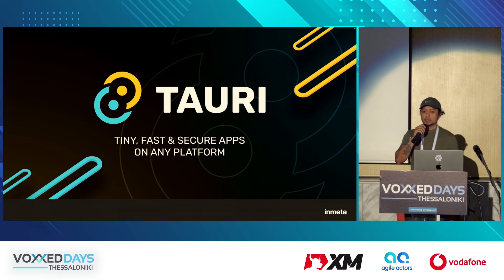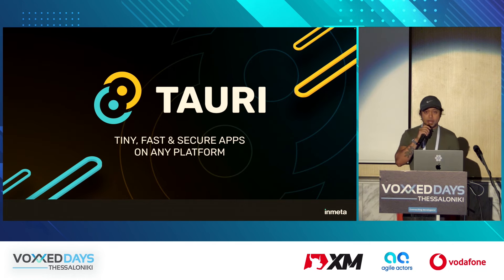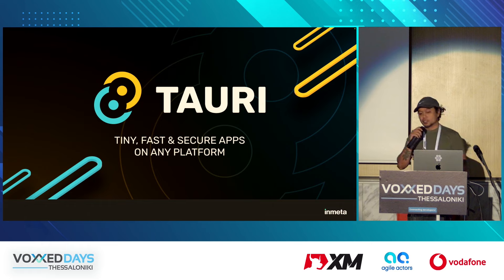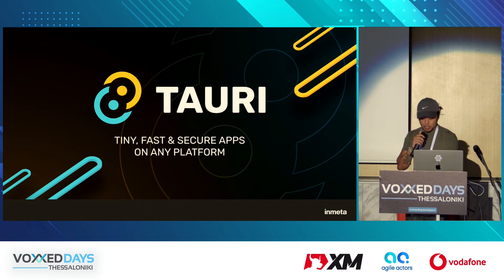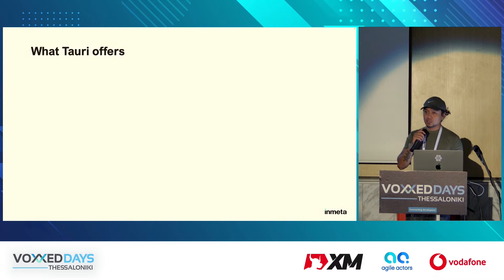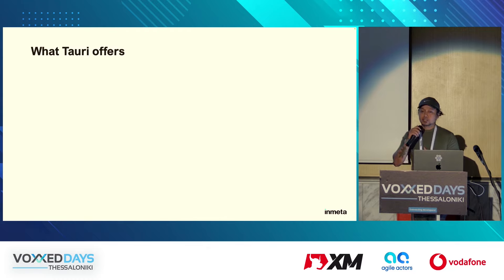So, what is Tauri? It is a framework designed to create binaries for desktop and mobile platforms. It is JavaScript framework agnostic, and you can use Rust, Swift, and Kotlin for custom functionality when necessary. Tauri is compatible with all front-end frameworks, allowing you to keep your current setup unchanged. This is because Tauri uses the web view of the operating system.